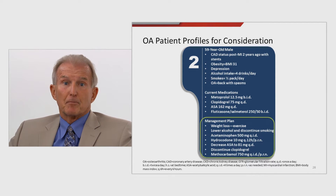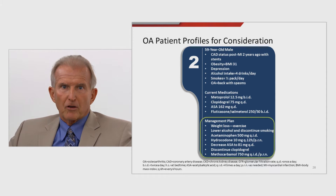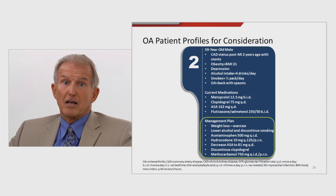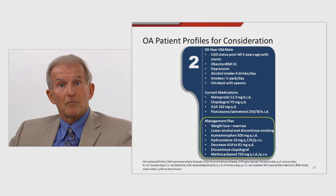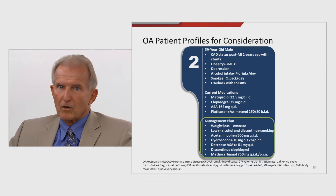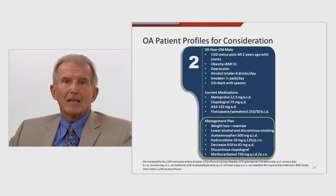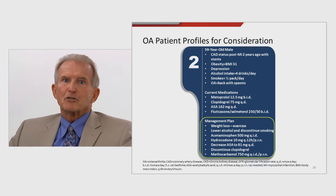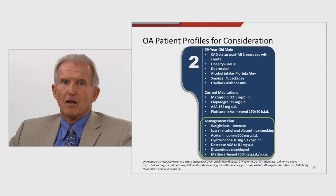Now let's look at our 59-year-old gentleman and his treatment plan. We want him to lose weight and start an exercise program. We'd like him to lower his alcohol intake to below three drinks per day, and I would address stopping smoking altogether — helping him take baby steps in all these lifestyle changes. For medications, I'd start him on acetaminophen 500 mg QID and adjust based on response. I'd give him hydrocodone and educate him — tell him the acetaminophen is his regular medication, and to use the hydrocodone only as needed. I'd also give him a muscle relaxant PRN for the resulting spasms. I would try to take him off his clopidogrel since it's been over two years since his stent was placed, and decrease his aspirin to a low-dose regimen — both moves will decrease his bleeding risk.